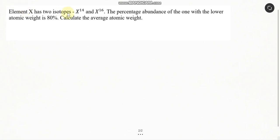Element X has two isotopes, X^14 and X^16. The percentage abundance of the one with the lower atomic weight is 80%. Calculate the average atomic weight.